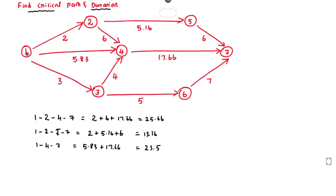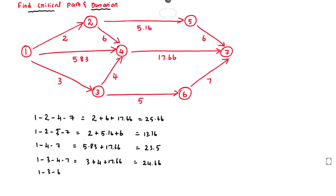The next path is 1→3→4→7, with a total value of 24.66. The next path is 1→3→6→7.